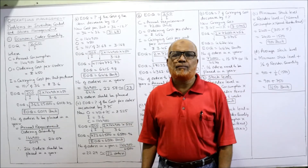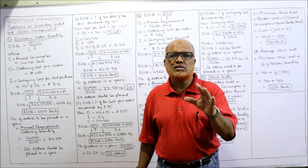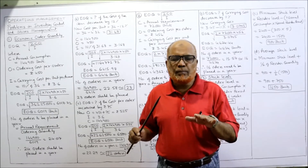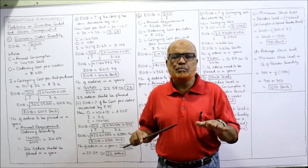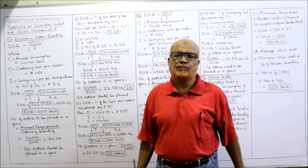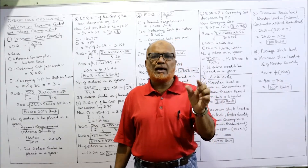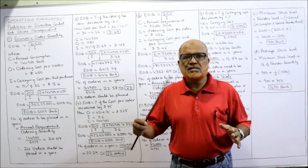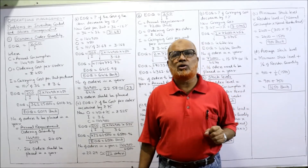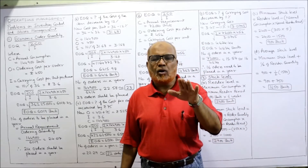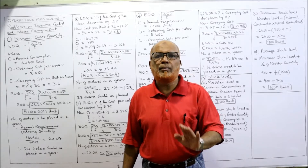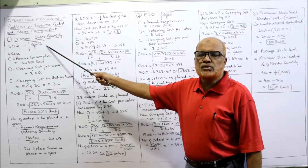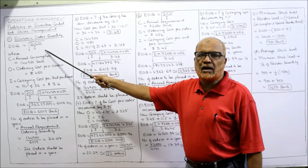EOQ — Economic Ordering Quantity — is that quantity which should be ordered from the supplier so that the ordering cost and carrying cost are minimum. In order to keep the aggregate of carrying cost and ordering cost minimum, we need an optimal quantity; that quantity is called Economic Ordering Quantity. The formula for EOQ is: EOQ = √(2CO / I).